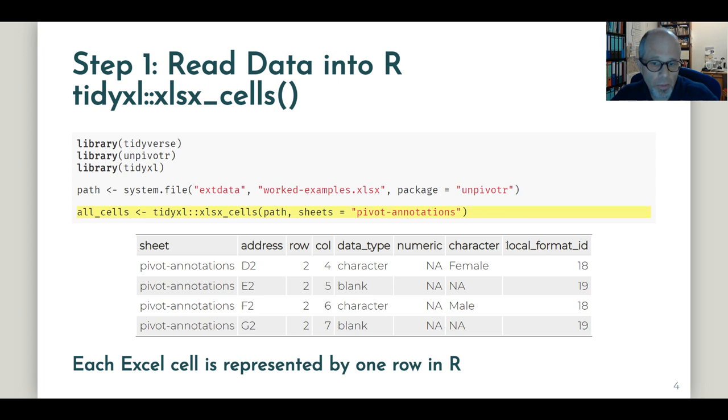Let's also keep in mind this local format ID column that we need later to process the formattings. So each Excel cell is represented by one row in R. And how do we move on from there?